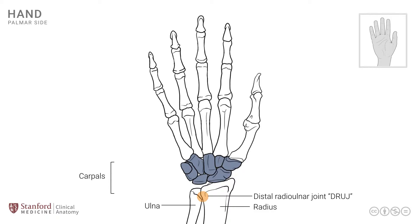Each of these carpal bones has a unique structure and a name. We're not going to review all of these, but only a few that have a high level of clinical significance. The first one is seen on the medial side of the wrist and is known as the pisiform bone. It is named after its pea-like shape, and it is the site of attachment of one of the forearm muscles known as flexor carpi ulnaris.